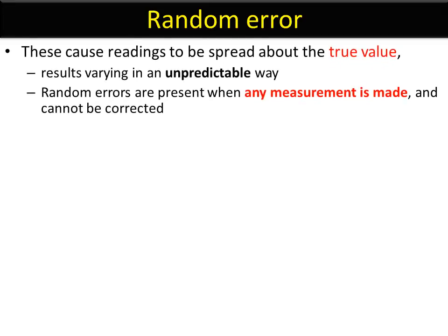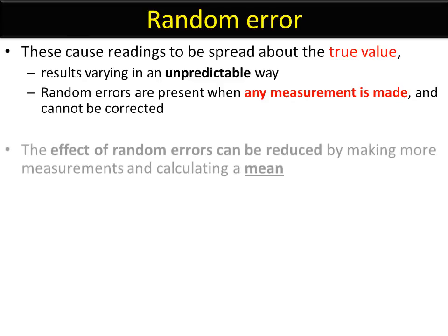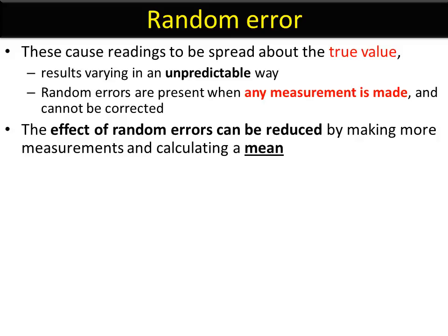Random errors are ones that you cannot do anything about. Every time you measure something, it's very rare you always get the same value in science. They happen in an unpredictable way and they mean there's an inaccuracy there. We already talked about this in video four, and we can reduce the effects of random errors by removing the anomalies and calculating a mean.